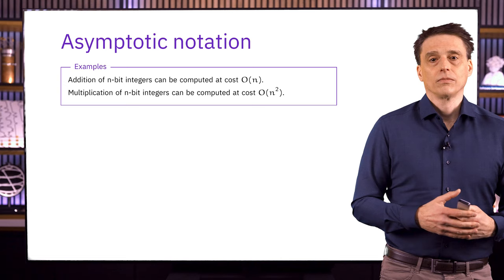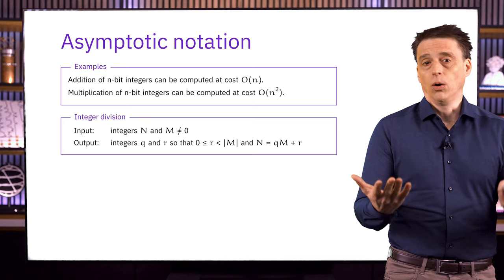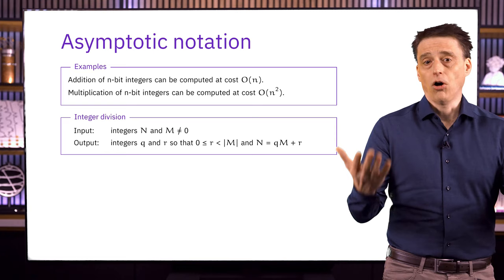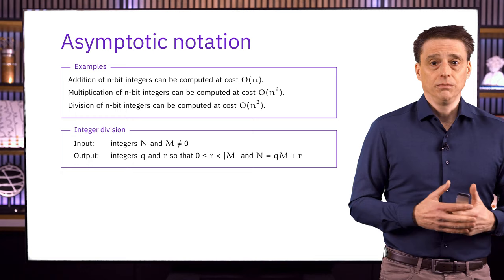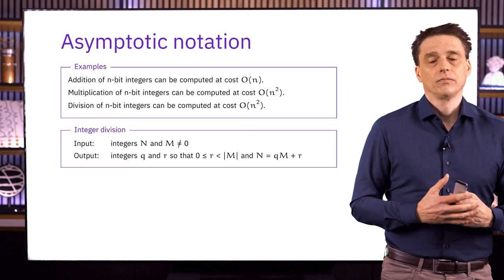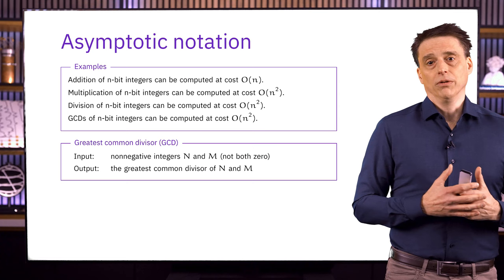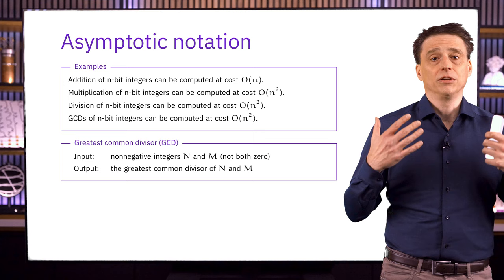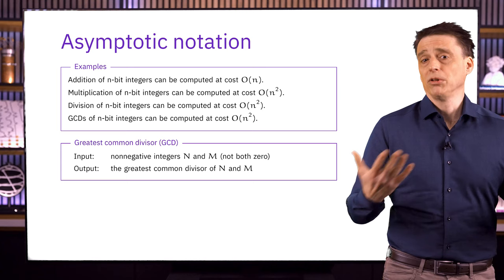We can also consider the problem of integer division — computing a quotient and a remainder, so the answer consists of two integers Q and R. There's a standard algorithm for division, and it also has quadratic cost, and like multiplication there are asymptotically superior algorithms. Euclid's algorithm for GCDs turns out to have quadratic cost — and that's what I meant earlier in the lesson when I said that we can compute GCDs at roughly the same cost as multiplying two numbers together. Once again, there are asymptotically superior algorithms along similar lines to addition and multiplication, although the cost is a little bit higher in this case.